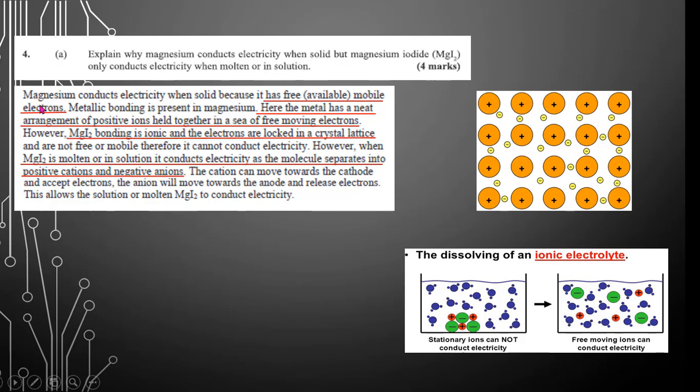So, magnesium conducts electricity when solid because it has free or available mobile electrons. If you look at the diagram here, these electrons here are what facilitates the movement of electricity.